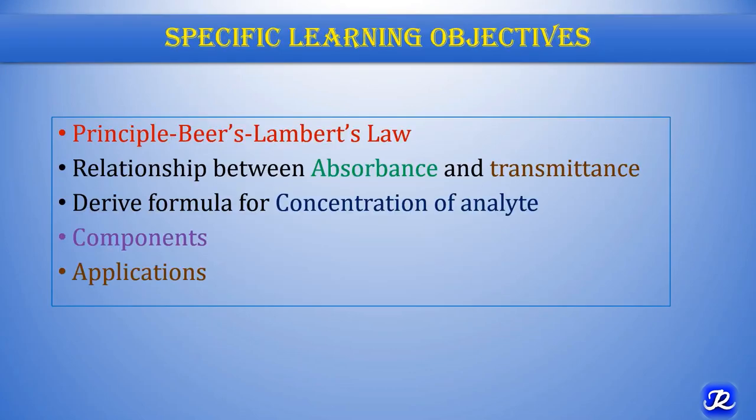First year MBA students can have a short answer question on this topic. BPMT and DMLT students can have a long answer question. At the end of this session, the student should be able to describe the principle of colorimetry, the relationship between absorbance and transmittance, derive a formula for concentration of analyte, and identify the components of colorimeter and their functions and applications.